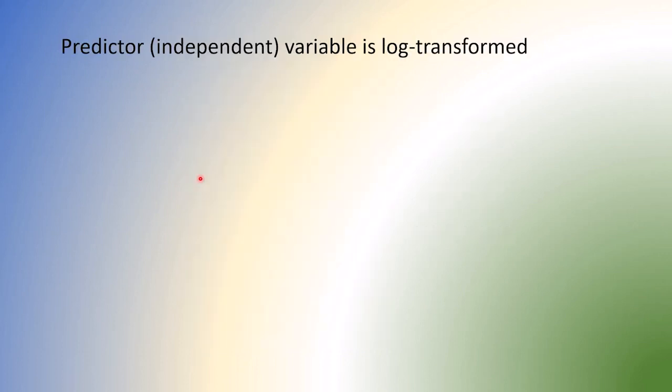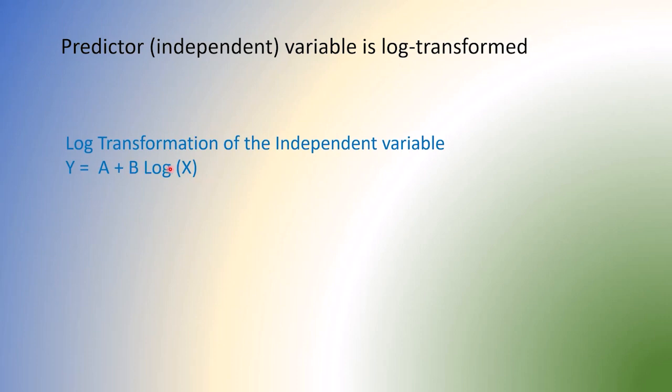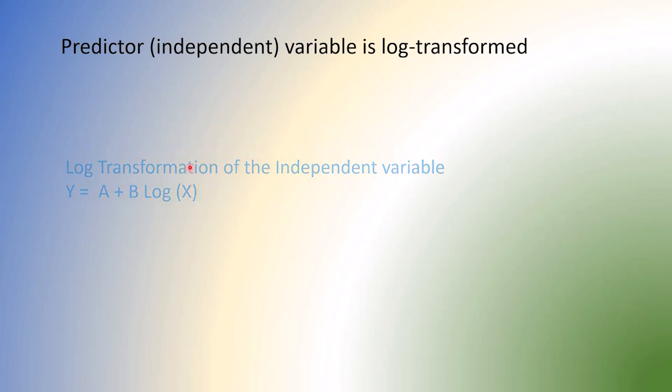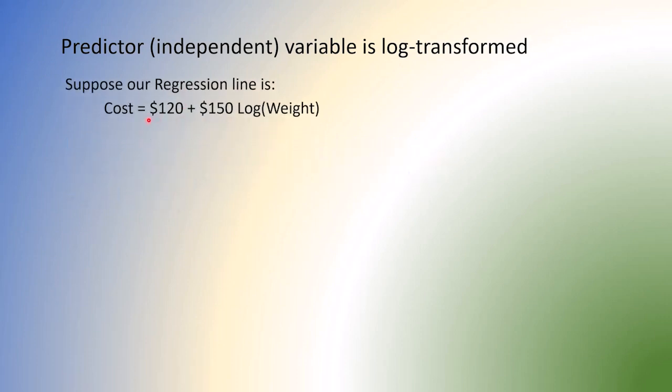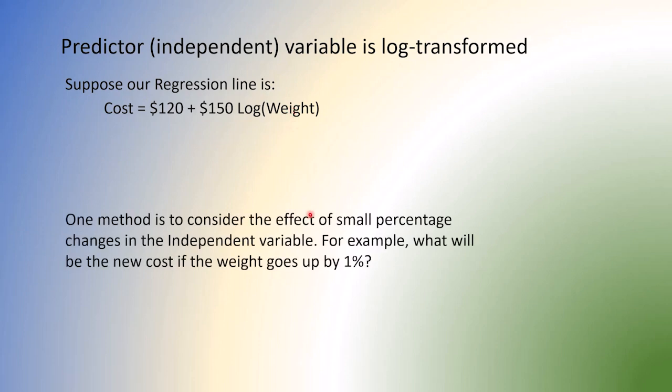Now we are going to discuss independent variable transformation. That is this one. Suppose our equation is this. Cost equal to 120 plus 150 times log weight. We transform the independent variable. So what we do here? We basically see what happens. Suppose the weight goes up by 1% or 5% or 2% etc. So let's start the process.